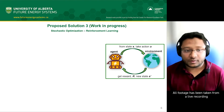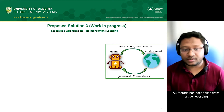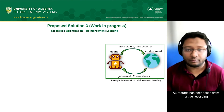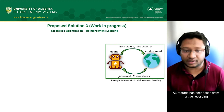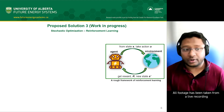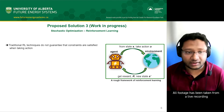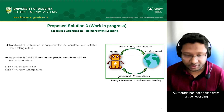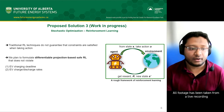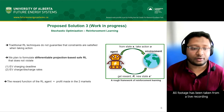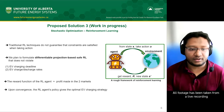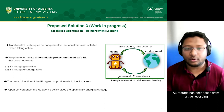The third approach is a reinforcement learning-based stochastic optimization method. Traditional RL techniques do not guarantee that constraints are satisfied, so we use a differential projection-based RL strategy to keep it safe. The reward function of this agent is equivalent to the profit, and upon convergence the agent will give us the optimal strategy.